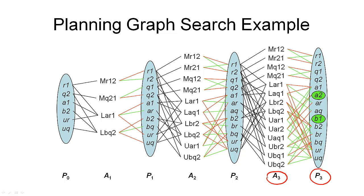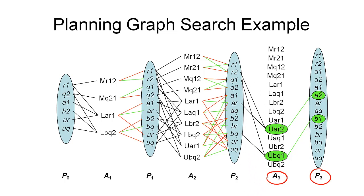Then we have to choose a set of non-mutex actions in our action layer A3 that together achieve all the goals in proposition layer P3. And the positive effect links tell us what options we have here. And in this case, it's quite simple. We choose these two actions here. Then we can follow the precondition links to identify the sub-goals in our proposition layer P2. And these are those four sub-goals as you can see here.